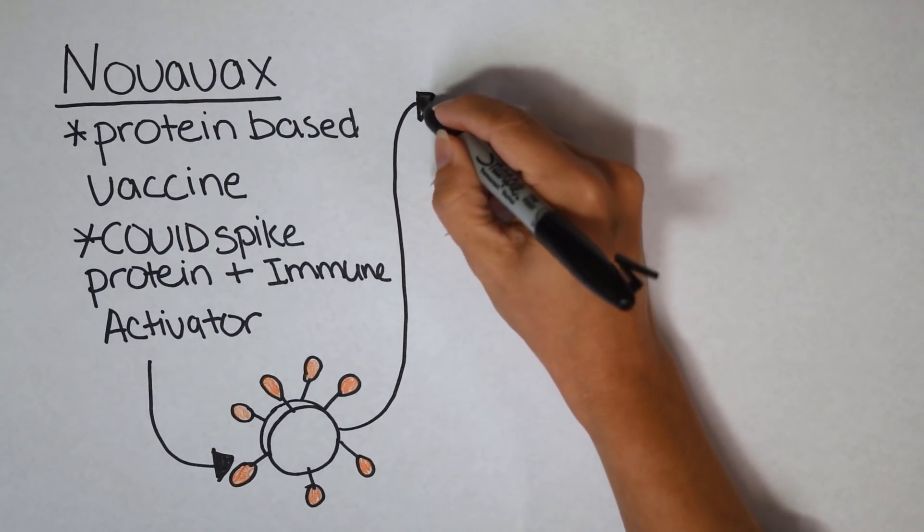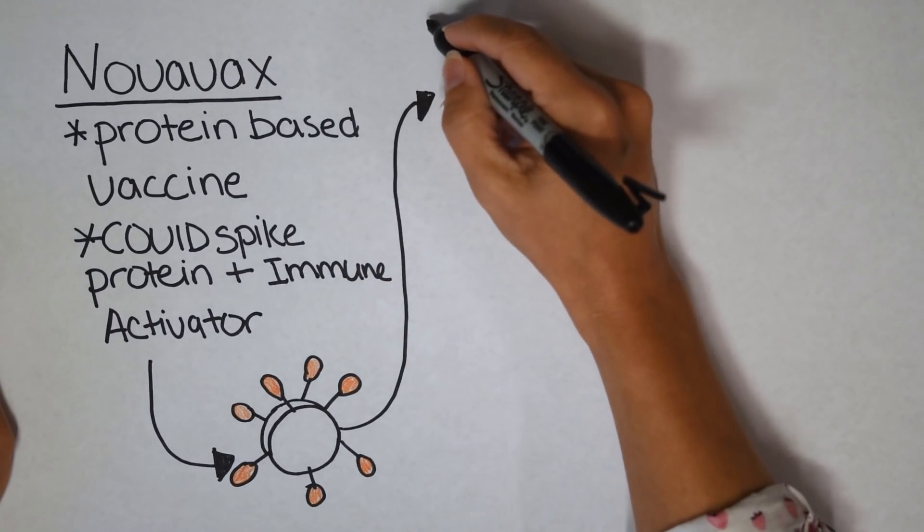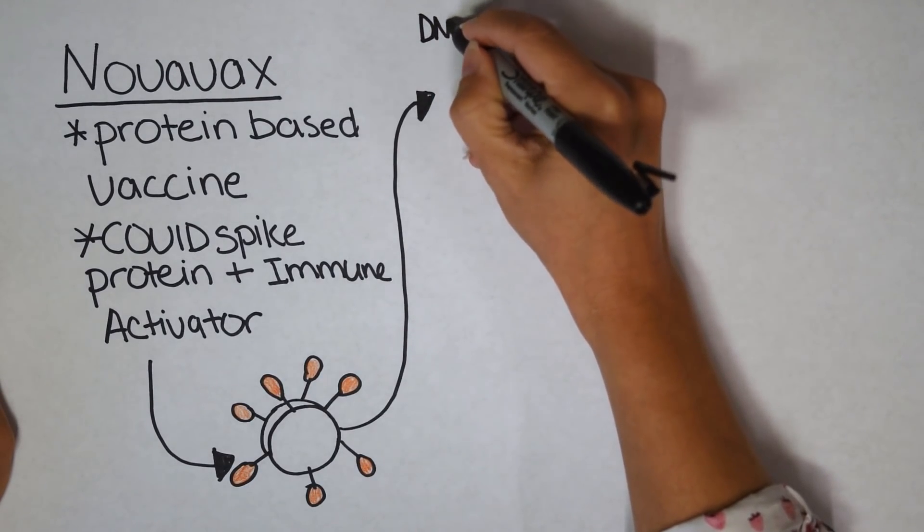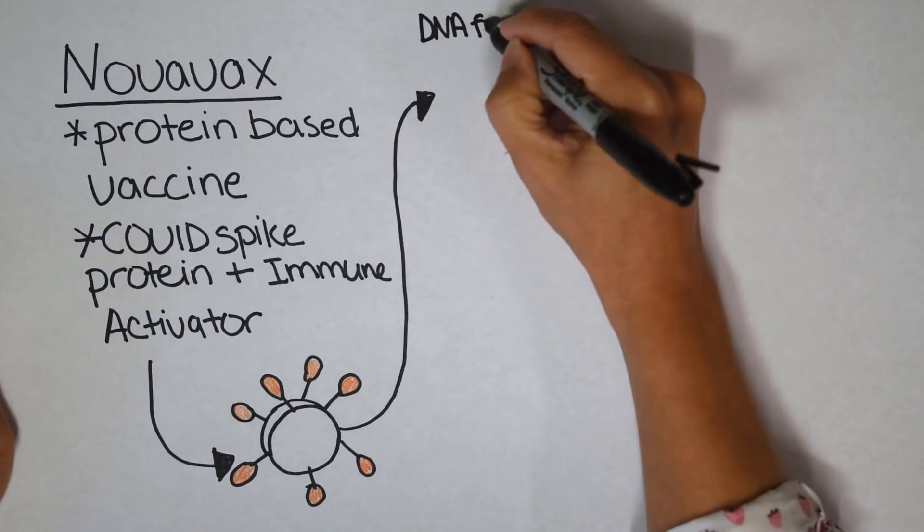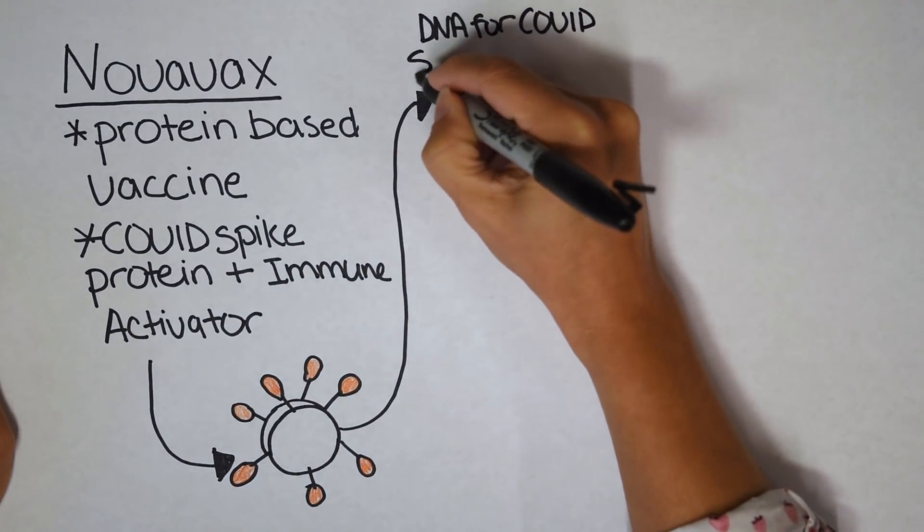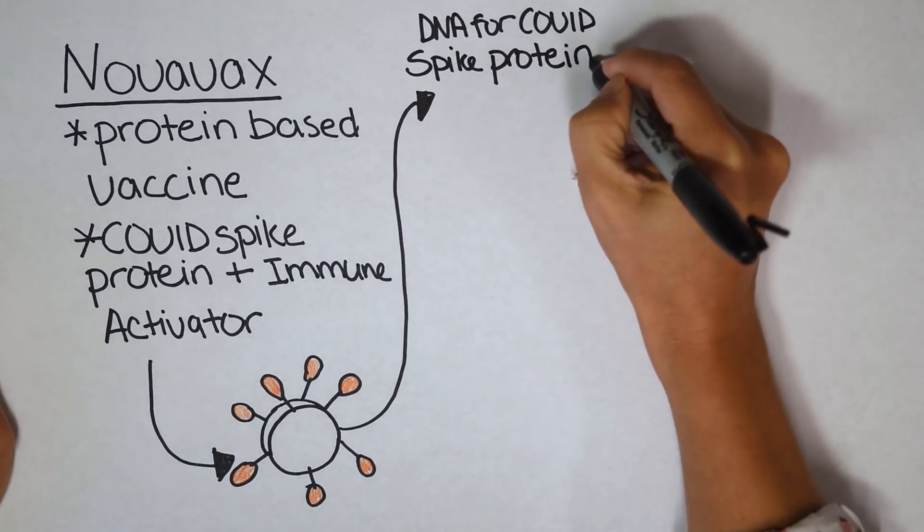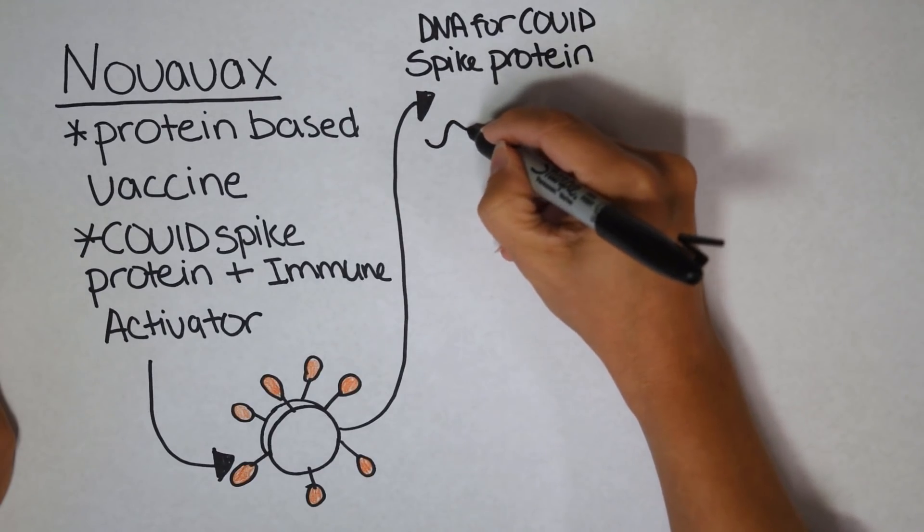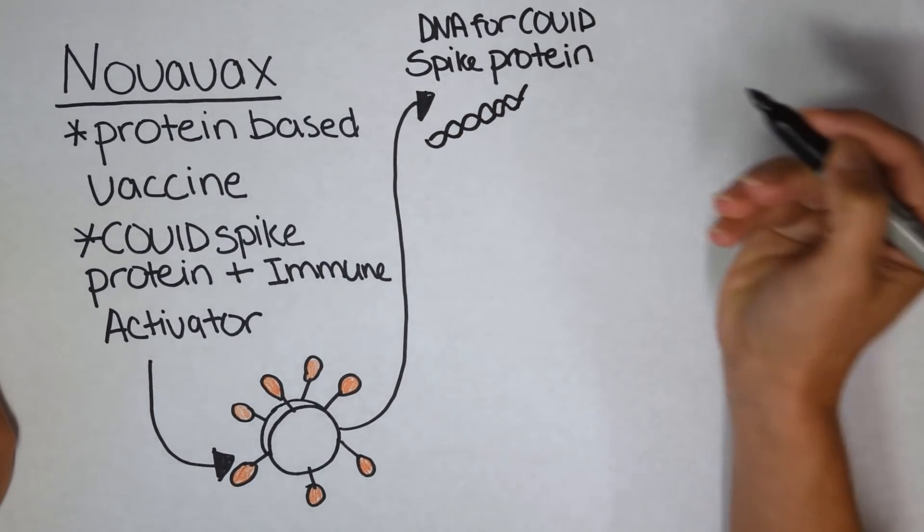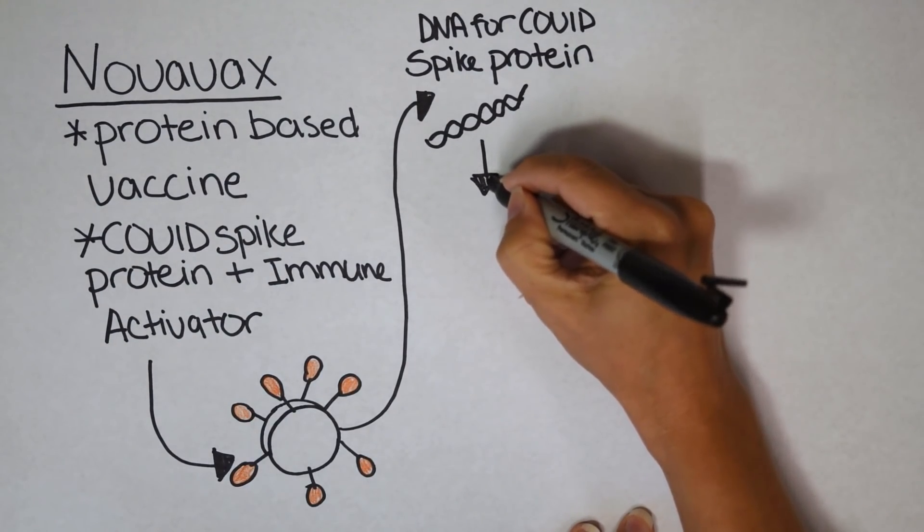So how? How did they assemble these COVID spike proteins onto a nanoparticle? And I'm going to tell you about that right now. The first thing they needed was DNA for the COVID spike protein. All right, so they didn't make these in a lab. They actually took the COVID spike protein DNA.